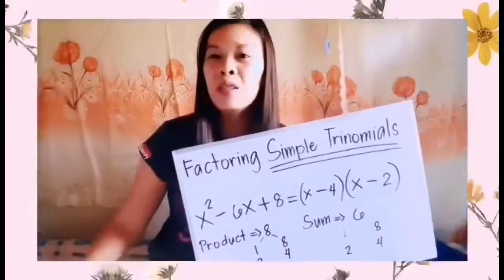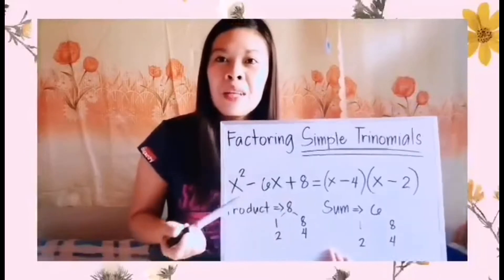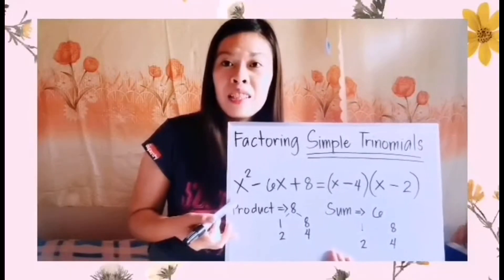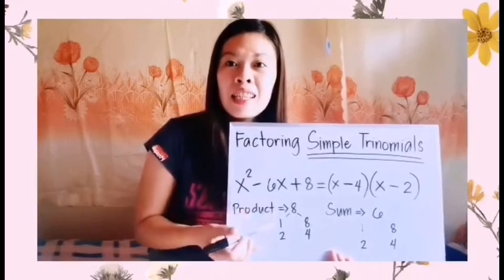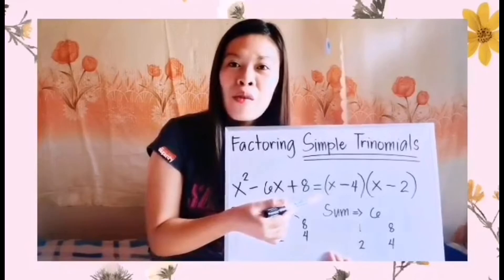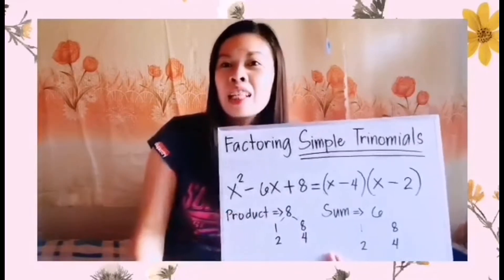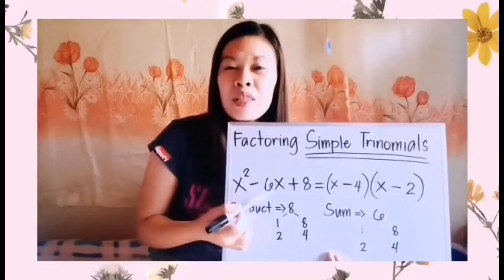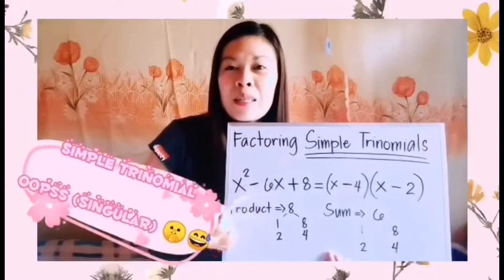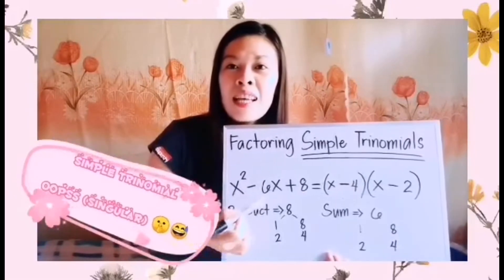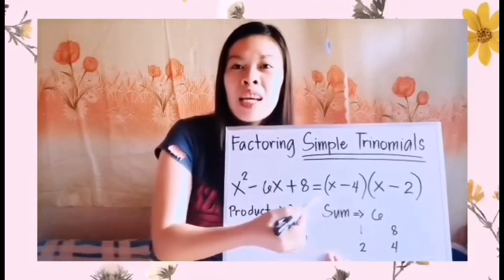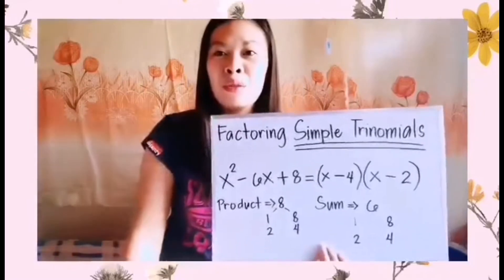Now let us have our second example with the answer. Our second simple trinomial is x squared minus 6x plus 8, which equals the quantity of x minus 4 times the quantity of x minus 2.